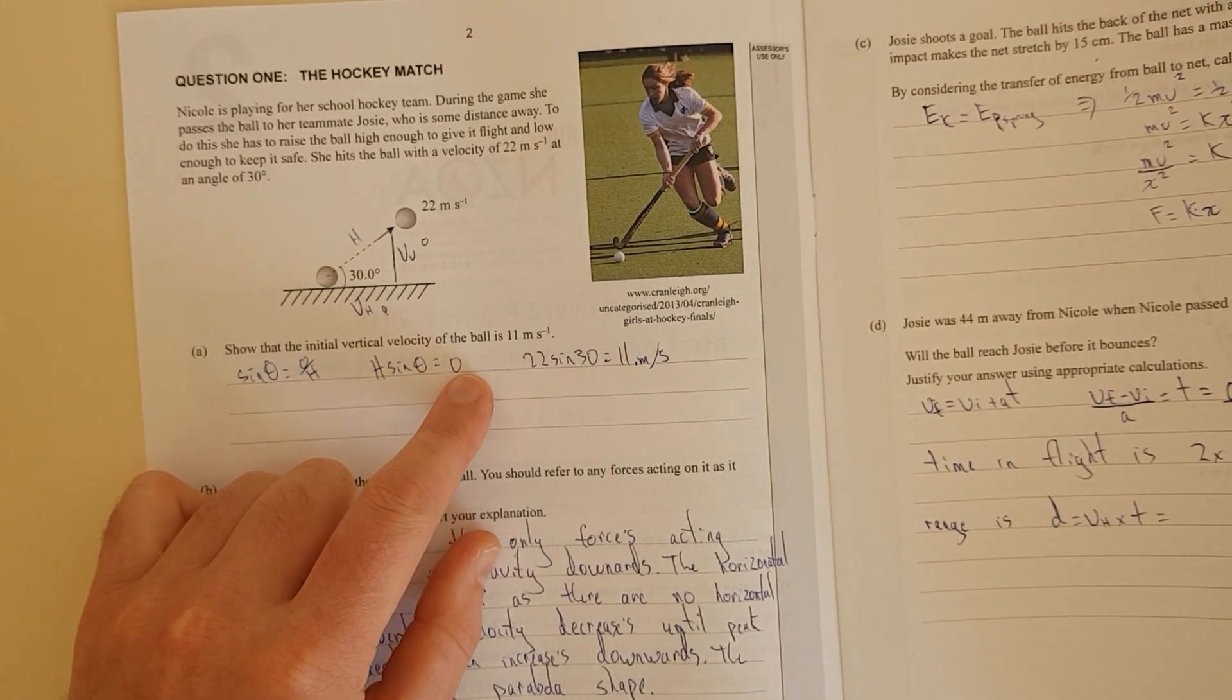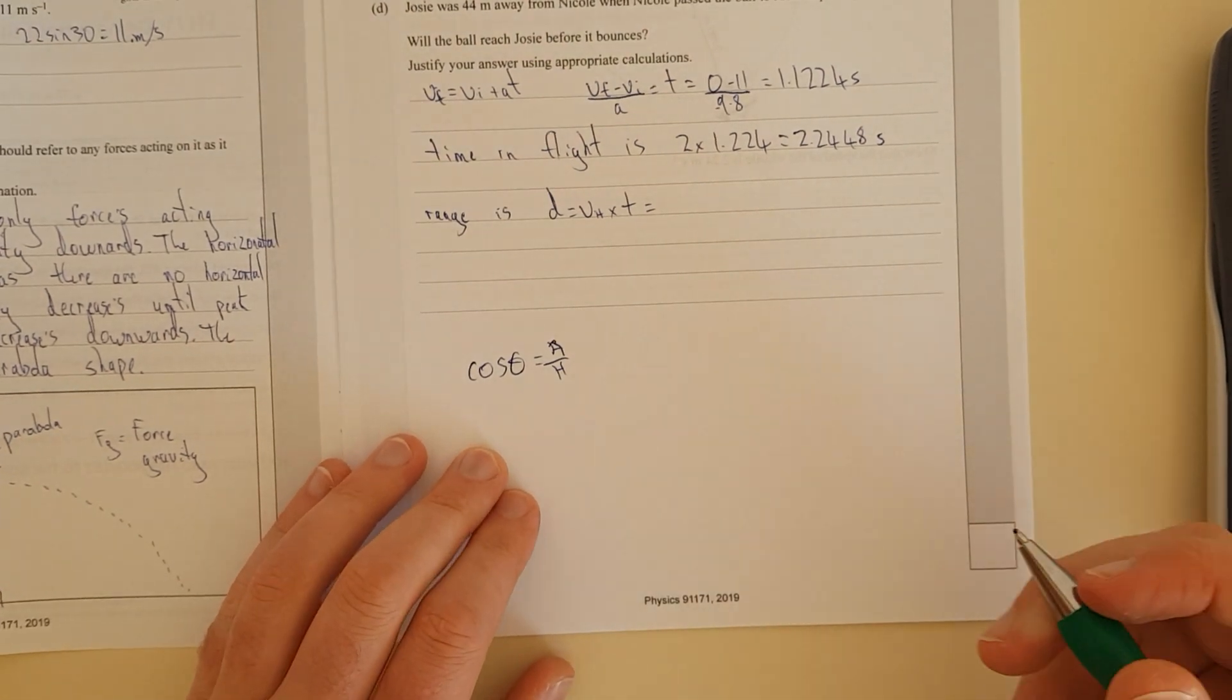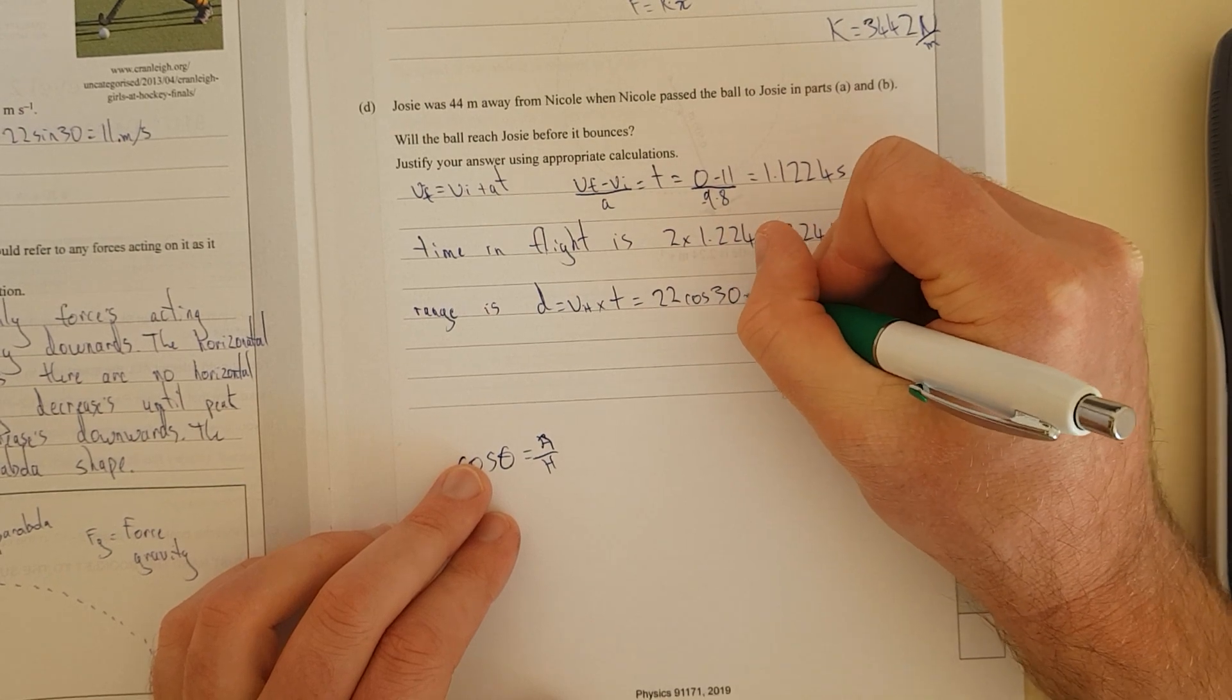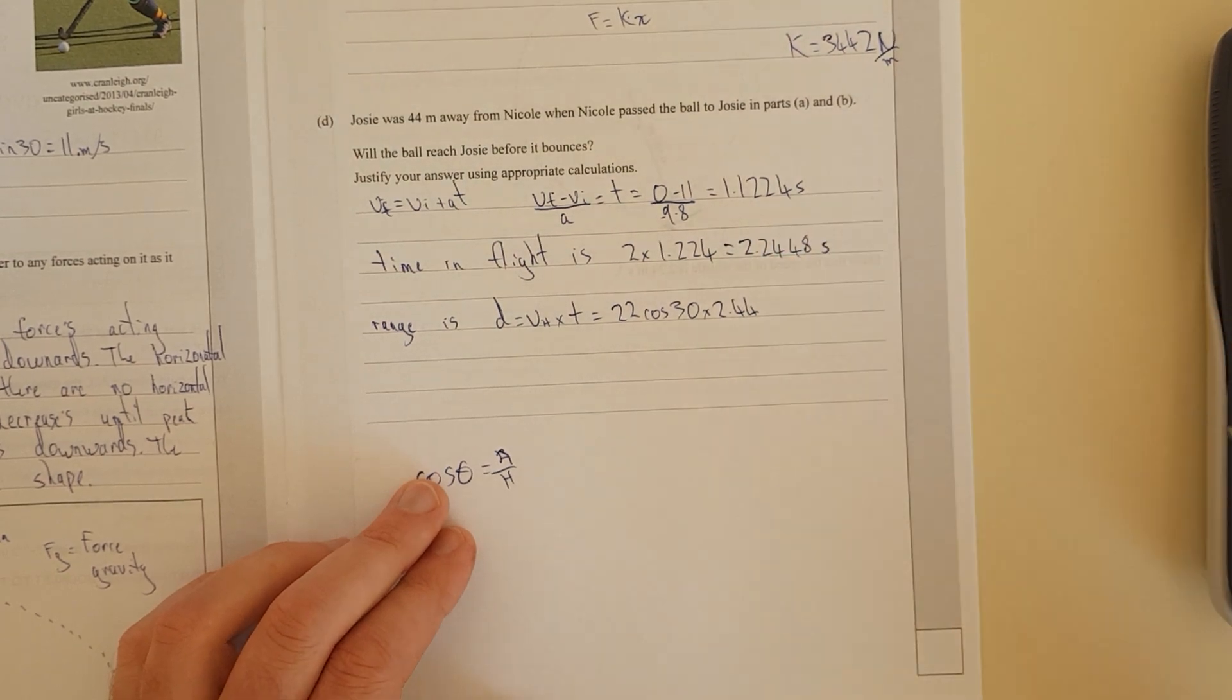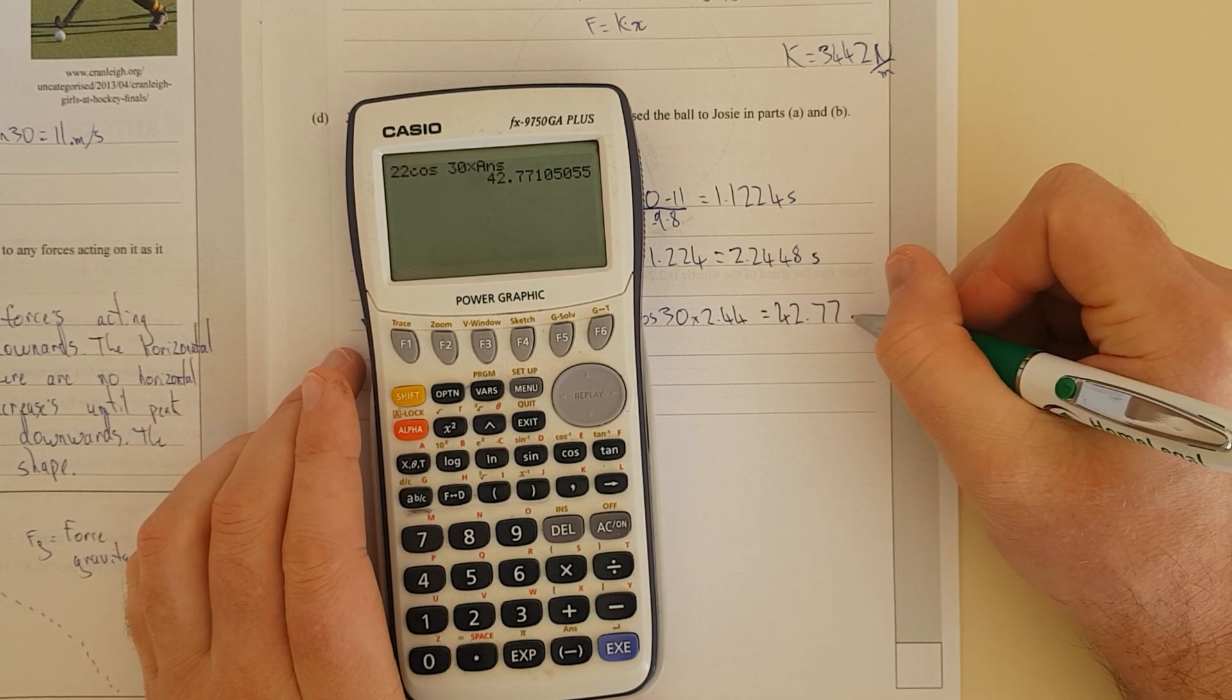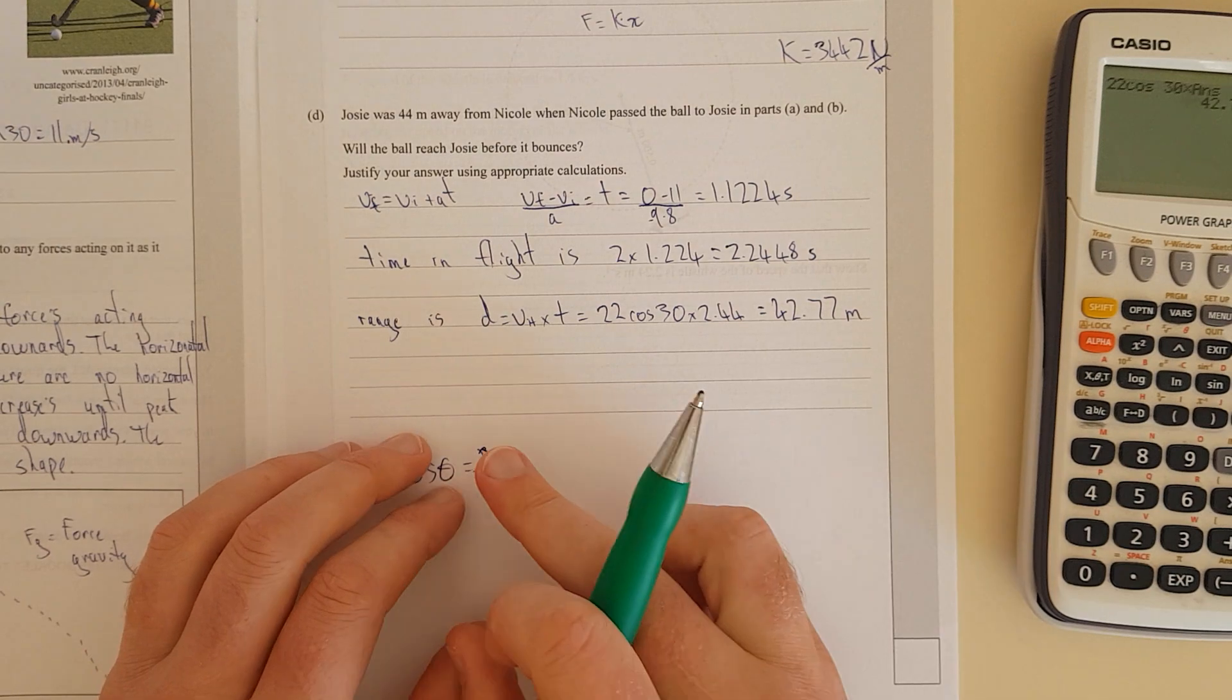That is going to equal 22 cos 30 degrees times the time which is 2.244 and the rest. That equals 42.77 meters. I just went 22 cos 30 times, and I just went shift answer to use the previous answer which was 2.24.